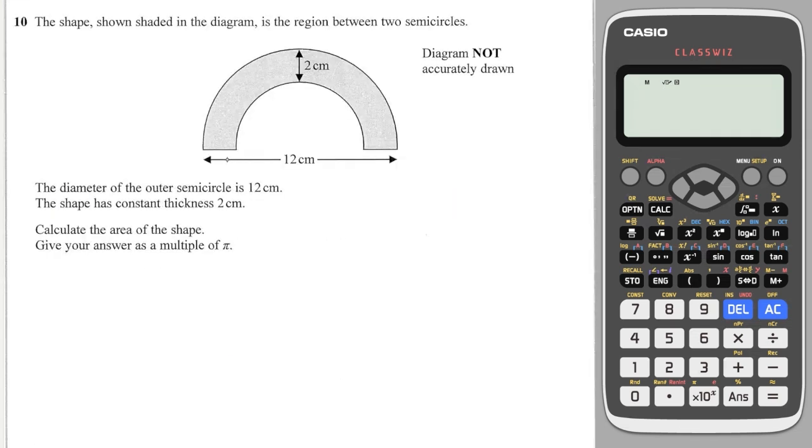The next question, we have two semicircles and we need to work out the area of the shaded region. Let's look at the larger semicircle first. That will have a radius of 6. So the area of the larger semicircle will be π times by 6² over 2, which is 36π over 2, which is 18π.